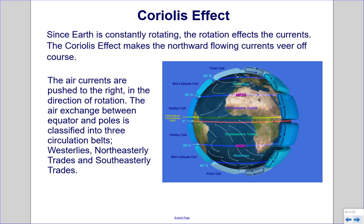Coriolis effect. Since Earth is constantly rotating, the rotation affects the currents. The Coriolis effect makes the northward flowing currents veer off course. The air currents are pushed to the right, in the direction of rotation. The air exchange between the equator and poles is classified into three circulation belts: westerlies, northeasterly trades, and southeasterly trades.